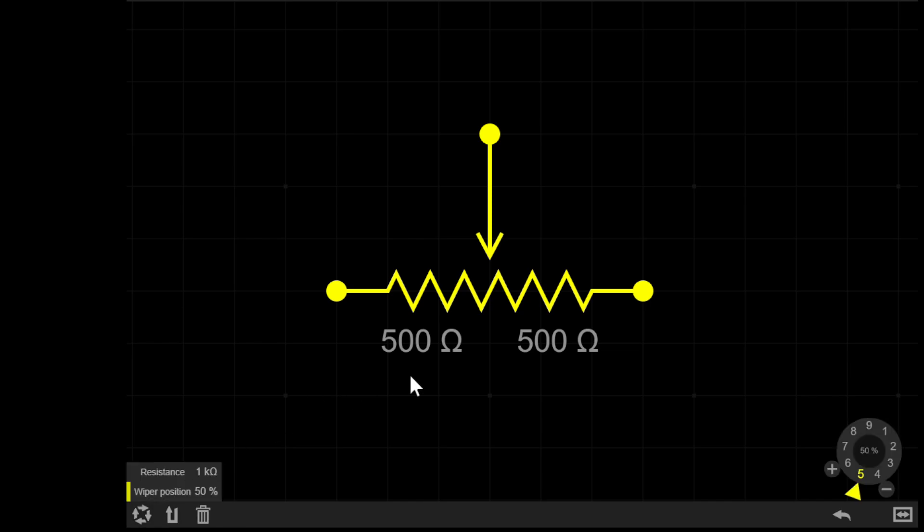So you can see on this pot, this is a 1k pot that can vary between roughly zero ohms, roughly 1000 ohms, and if I move the slider along, you get a different amount of resistance either side of the wiper.